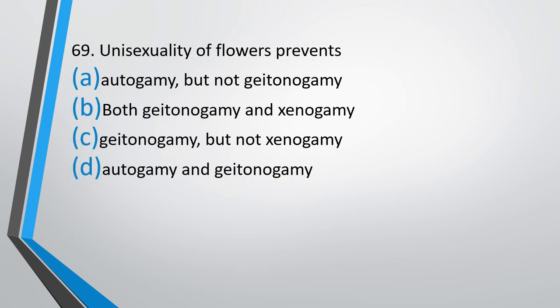Question number 69. Unisexuality of flower prevents: autogamy but not geitonogamy, both geitonogamy and xenogamy, geitonogamy but not xenogamy, or autogamy and geitonogamy. The correct answer is option A — it prevents autogamy but not geitonogamy.